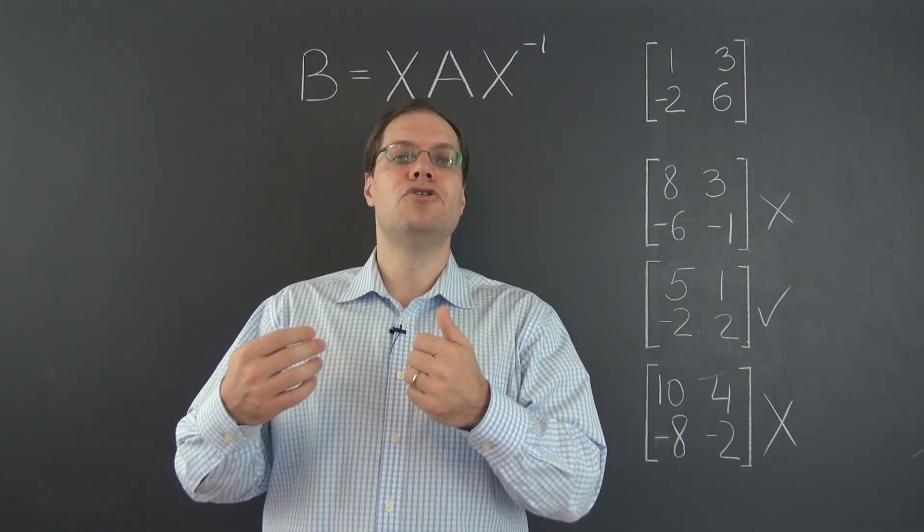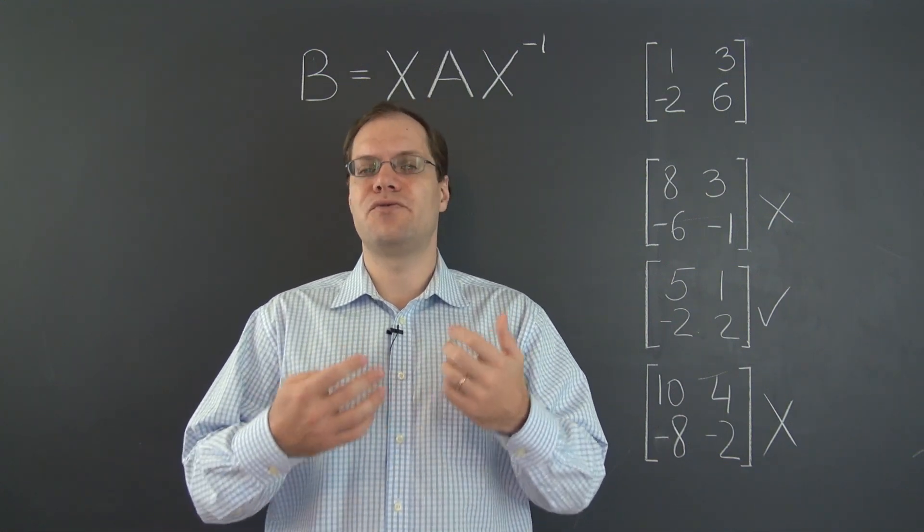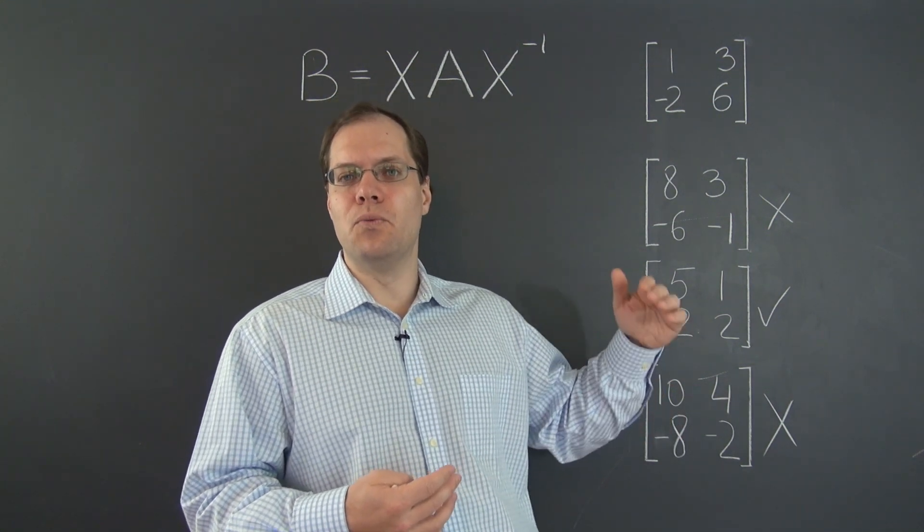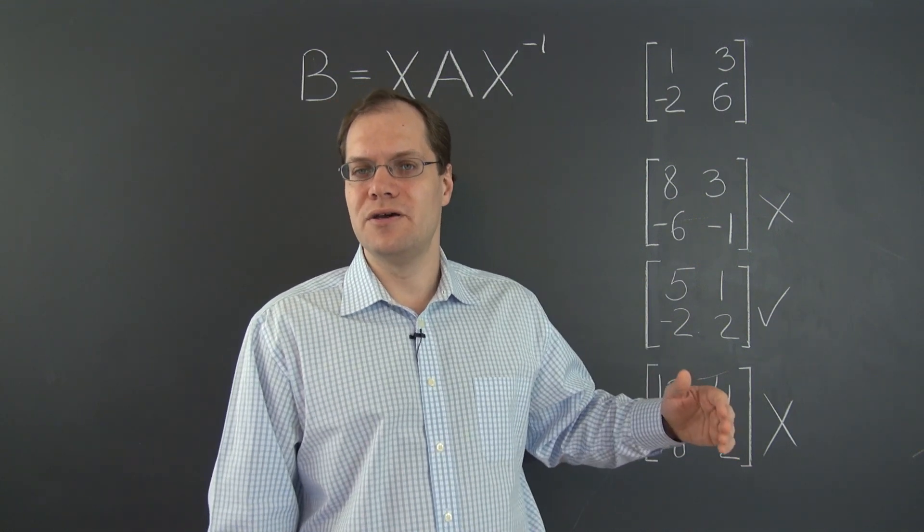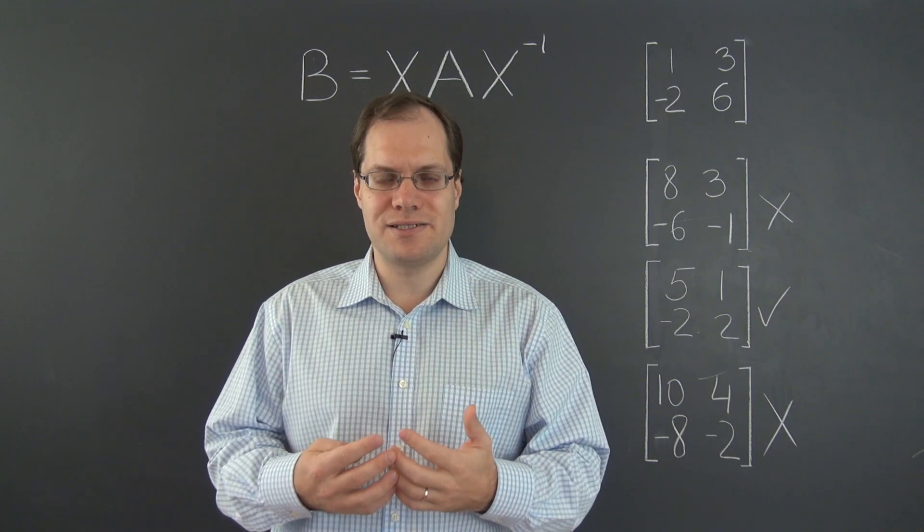So if you have two matrices, two 3-by-3 matrices, and the eigenvalues of one of them are 1, 1, and 3, the eigenvalues of the other one must also be 1, 1, and 3, and not 1, 3, and 3. So the eigenvalues need to be the same and multiplicities need to be the same.